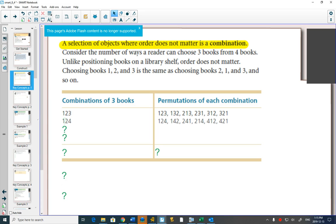You could also pick book 1, book 2, book 4; one, three, and four; one, two, three, and four. There's only 4 combinations, but there would be 24 permutations.